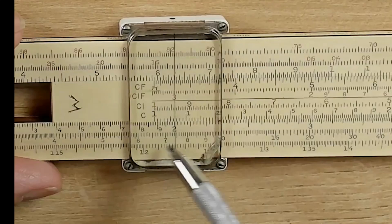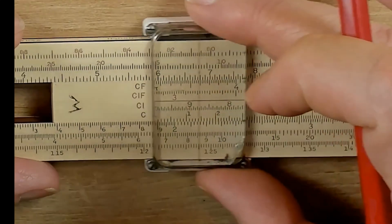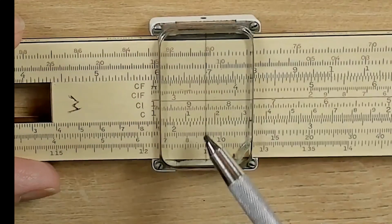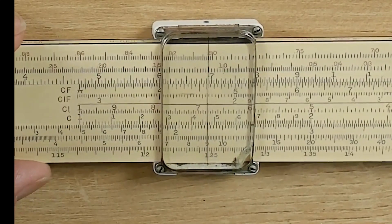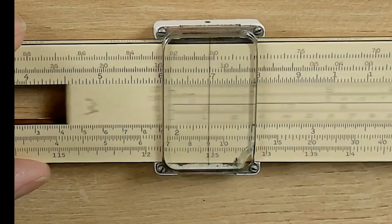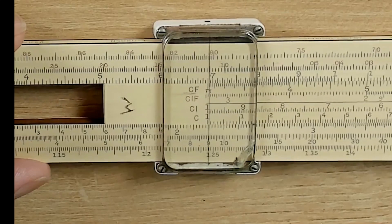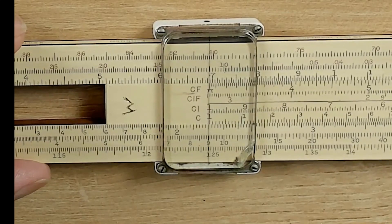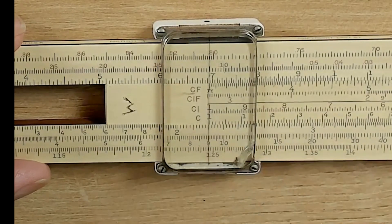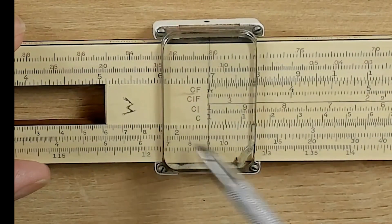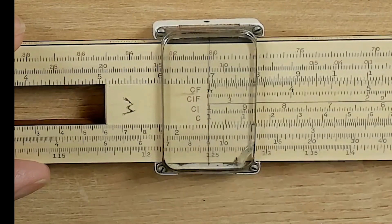So, down on the D scale, here's 2, and here is 2.2. Now, if we come up to the C scale and put the index directly over the C scale, we have a relationship now. Now, 2.2 to 1. Now, as you know, there are 2.2 pounds in 1 kilogram.